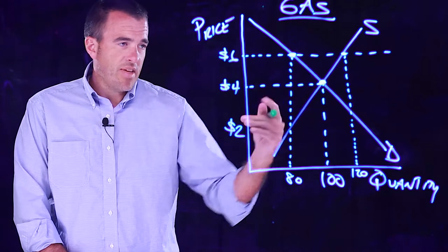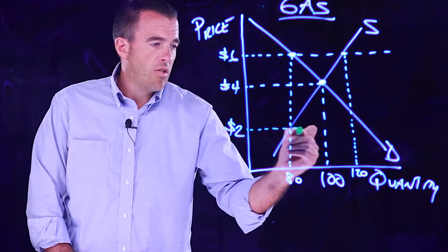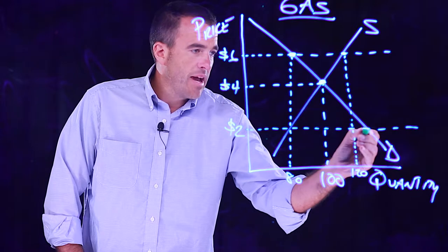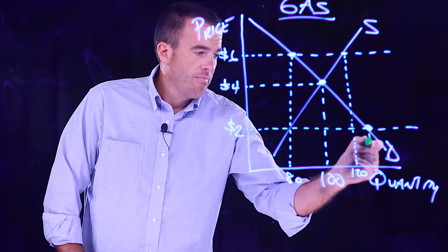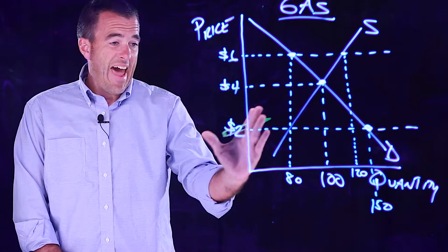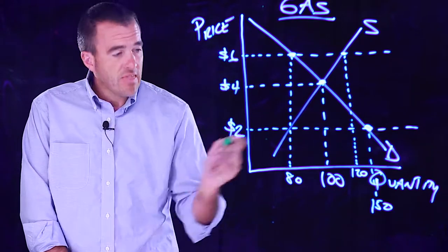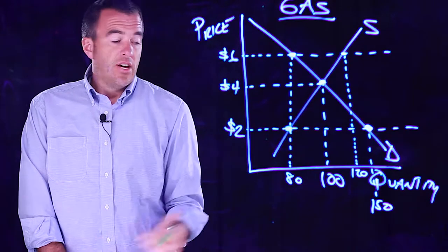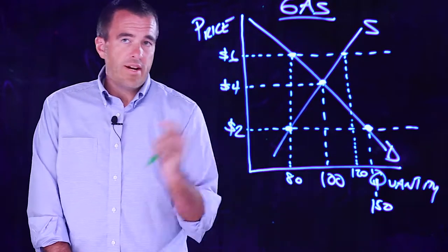At $2, do the same thing we just did before. We draw a line straight across and we want to see where it hits the demand curve. Right here. Let's say 150 people want it at $2. And let's say here's where it hits the supply curve at 80 units.